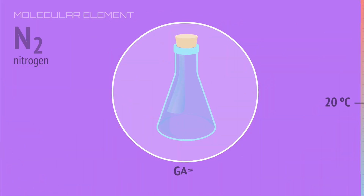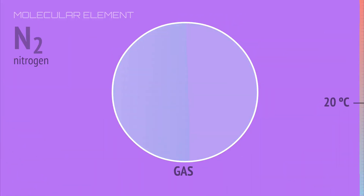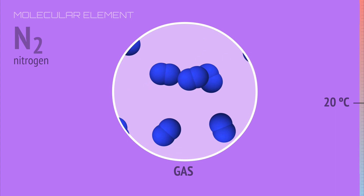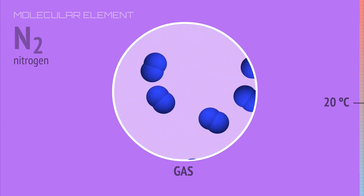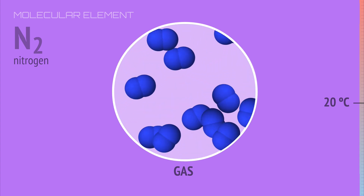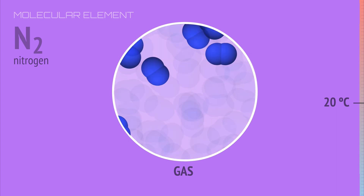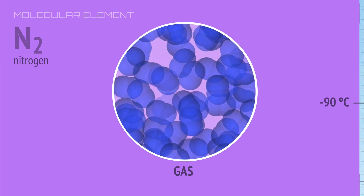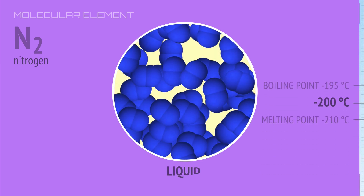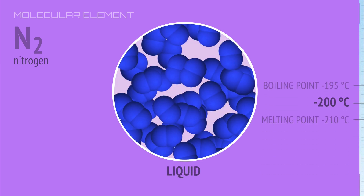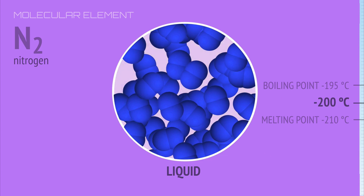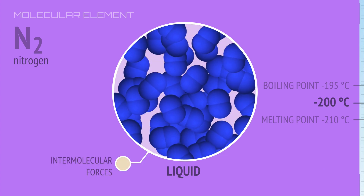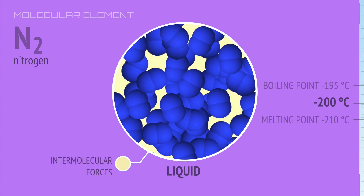Nitrogen is a gas at room temperature. Nitrogen molecules only experience weak intermolecular forces of attraction. The temperature needs to fall to minus 195 degrees Celsius, the boiling point of nitrogen, before these forces can cause a liquid to form.